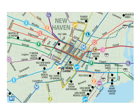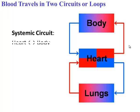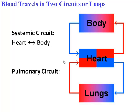To understand the path of blood, it's kind of like the New Haven bus system. In New Haven, there are different buses, and each bus travels a different loop — it's the same thing with the human circulatory system. There are two main circuits, or loops, that blood travels in your body. The first loop is known as the systemic circuit, where blood is moving between the heart and the body. The second loop is known as the pulmonary circuit, where blood is moving between the heart and the lungs.